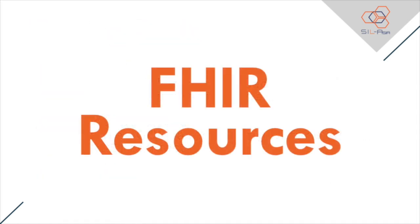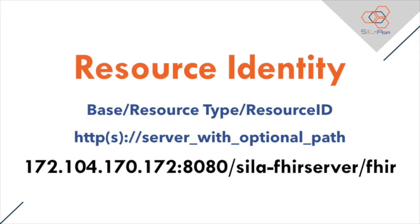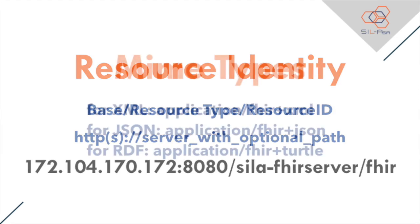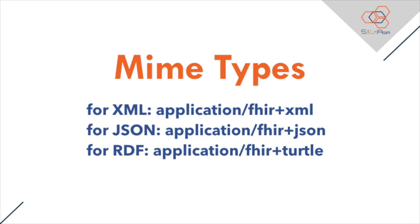FHIR is based on resources — the building blocks that can be exchanged. A URL identifies the resource and specifies where it can be accessed. If the URL is accessed via the FHIR RESTful API, it will be in this format: base slash resource-type slash ID. The base is the service base URL — the address where all resources defined by the interface are found — taking the form http or https colon slash slash server with optional path. In the SIL Asia FHIR server setup, the base URL is 172.104.170.172:8080/zilla-fhir-server/fhir. Resource instances are represented as either XML, JSON, or RDF.